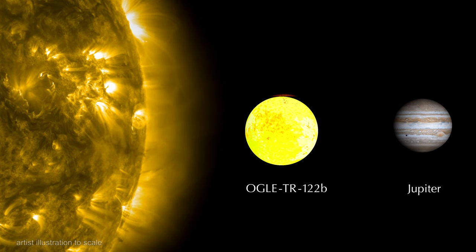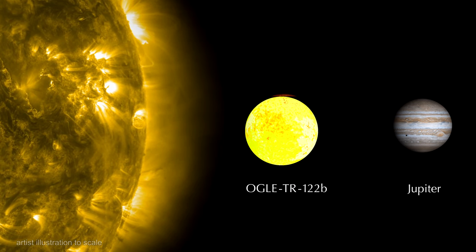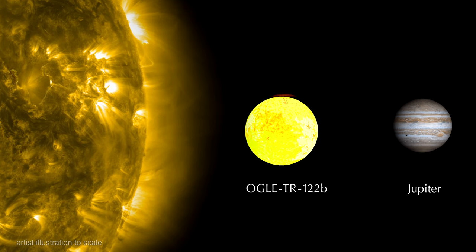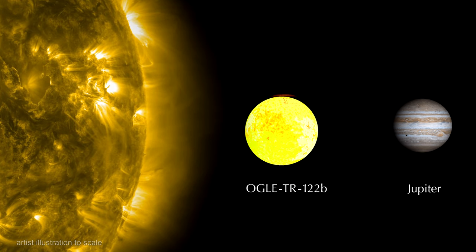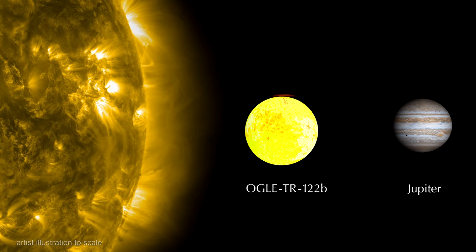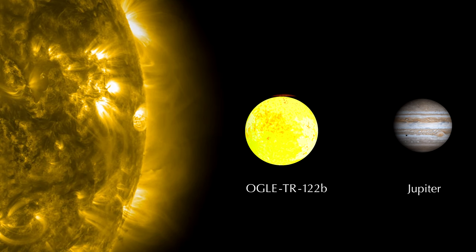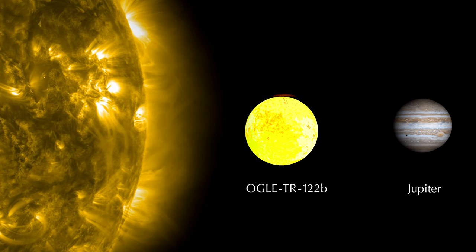This gives us a way to distinguish brown dwarfs from low-mass stars. Brown dwarfs have lithium in their atmospheres, and stars don't. So, we see that distinguishing brown dwarfs from stars is easier than distinguishing them from planets.